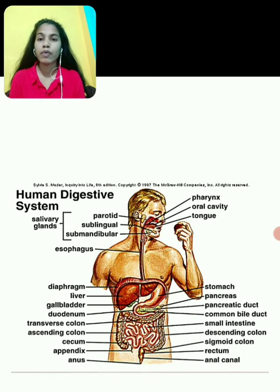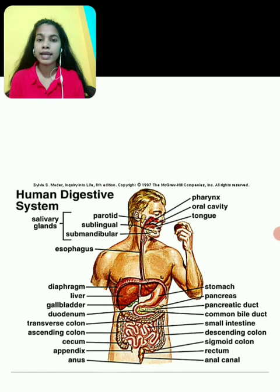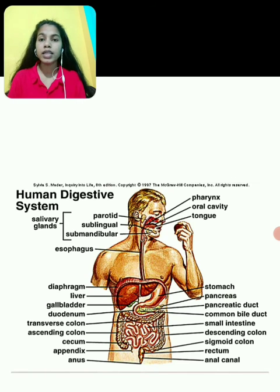The last part is the anus or rectum. The rectum temporarily stores the food and later on it is converted into feces, which is a waste material. The glands are also a most important part of the human digestive system. These include the salivary glands.